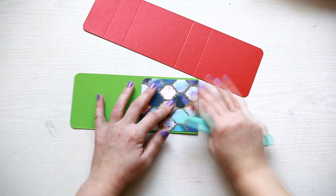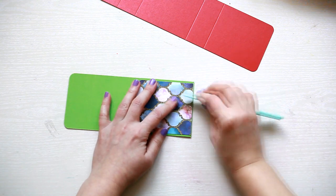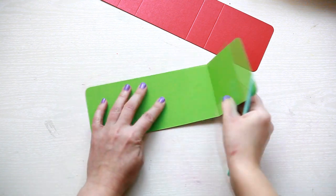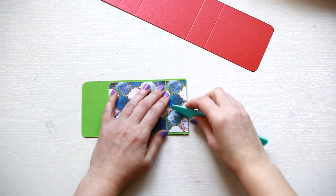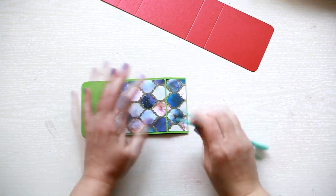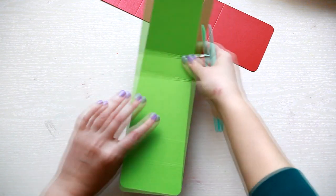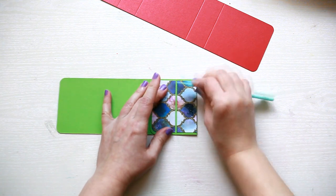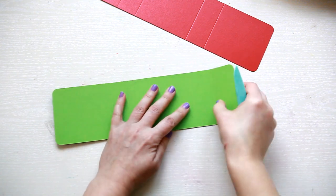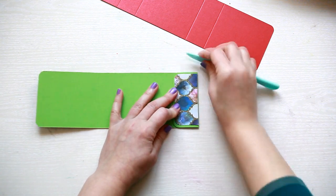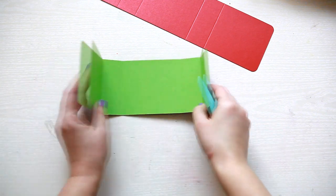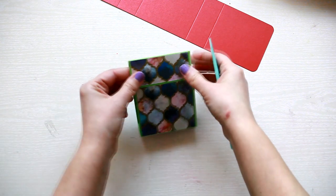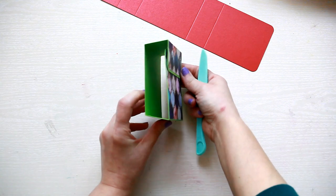Then you will have to fold and burnish the scored lines. So when you close it, it will look something like this.